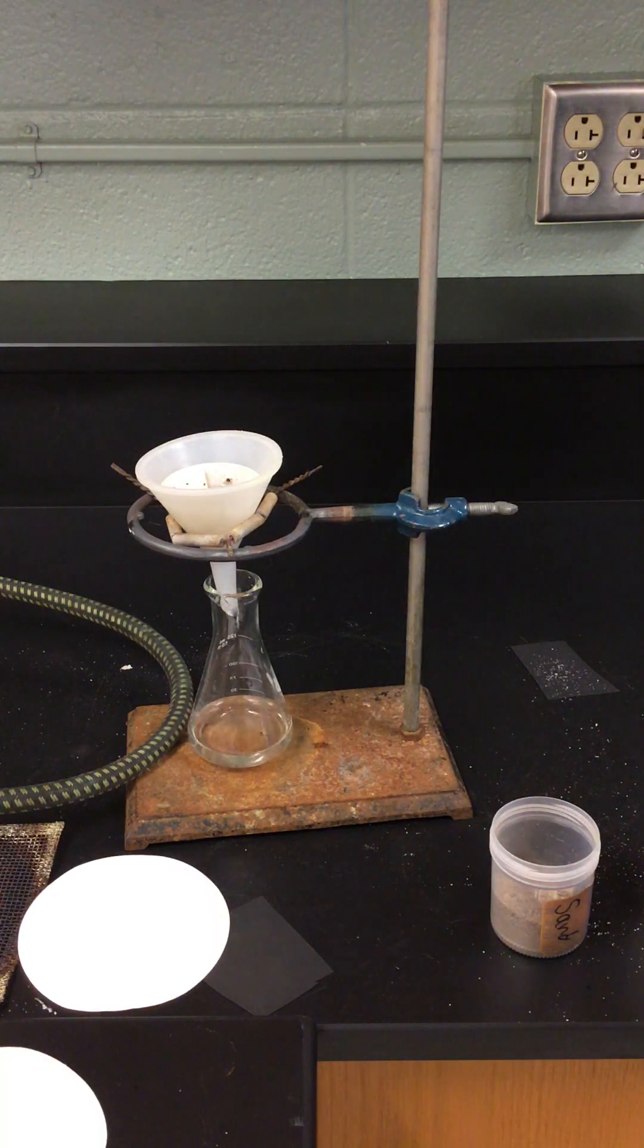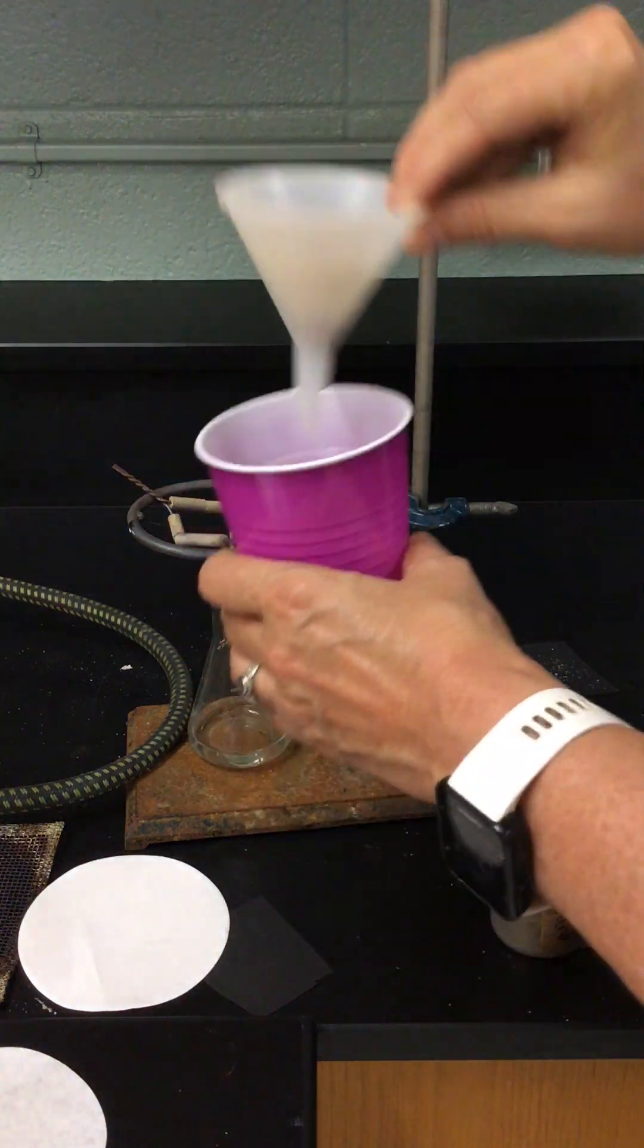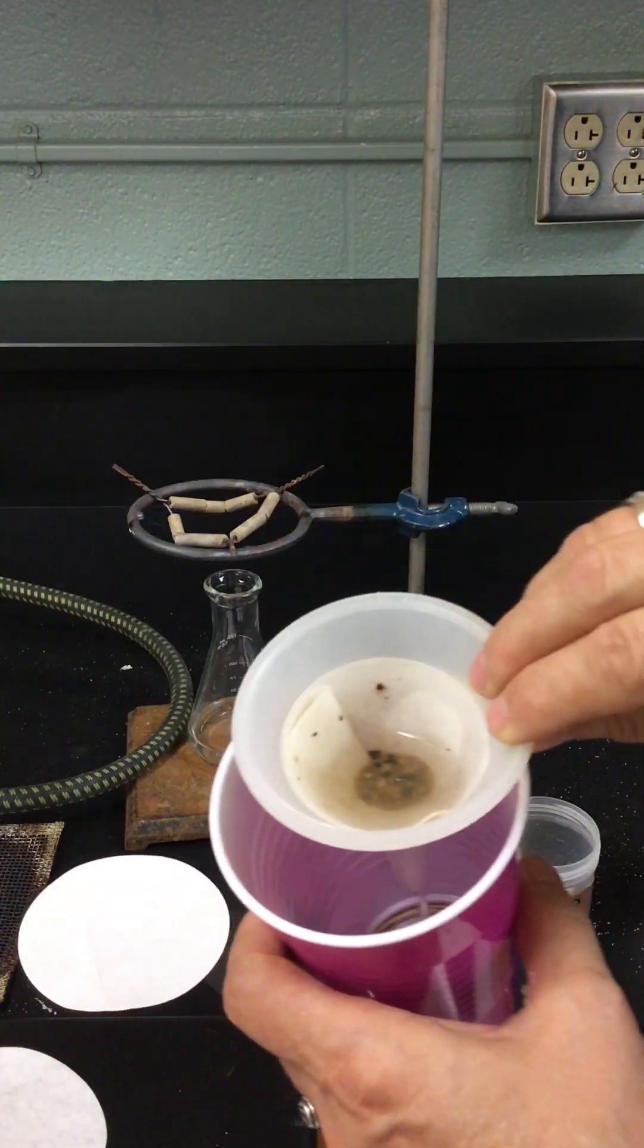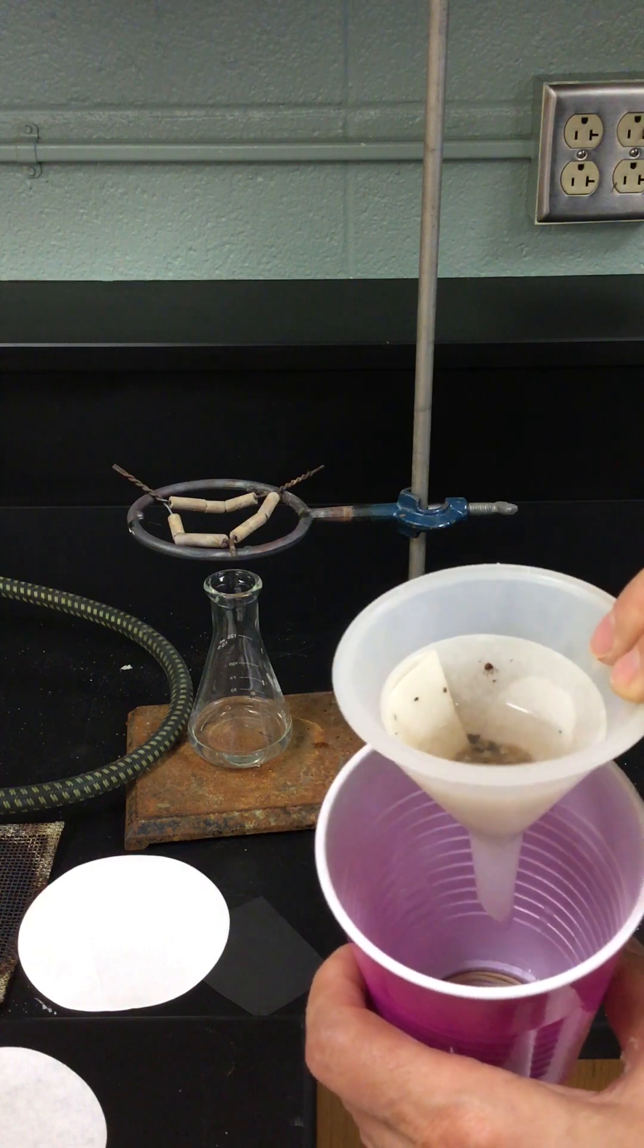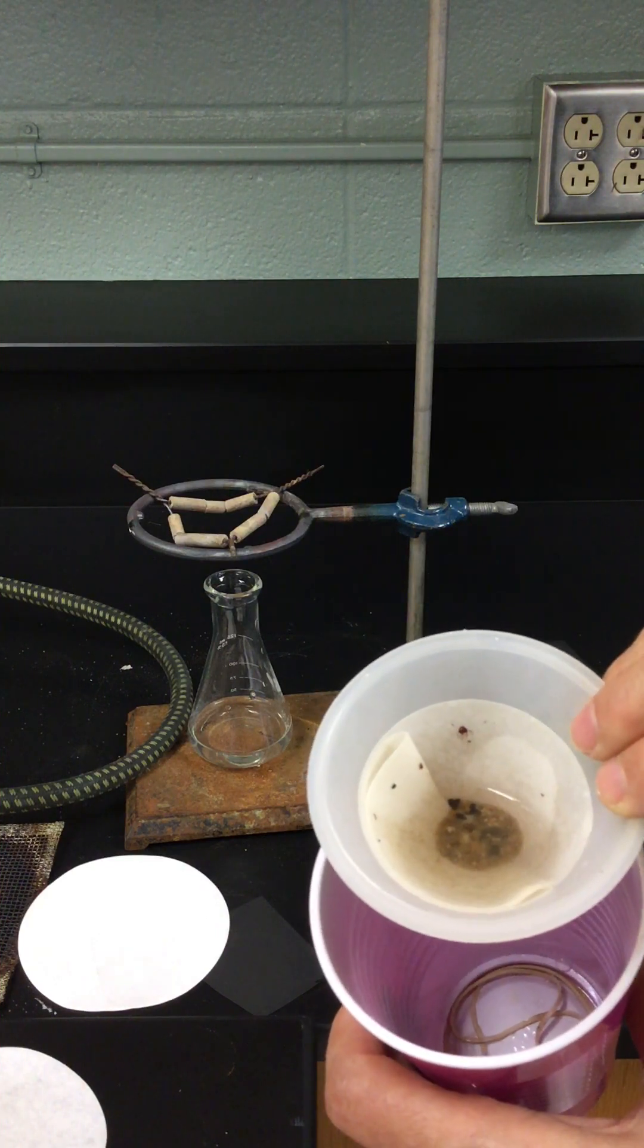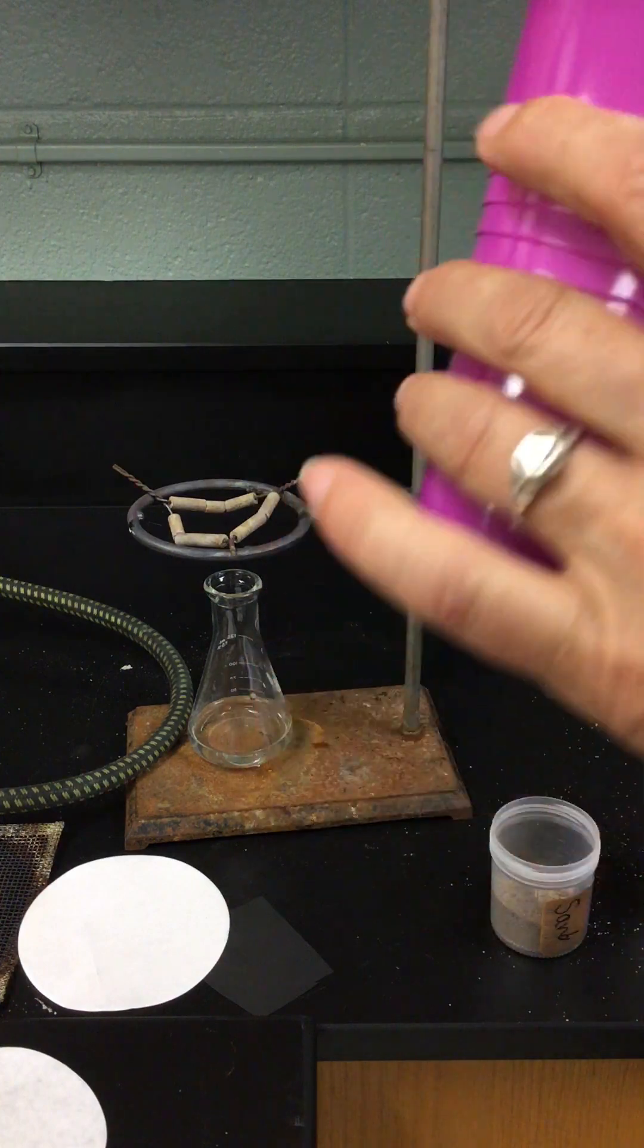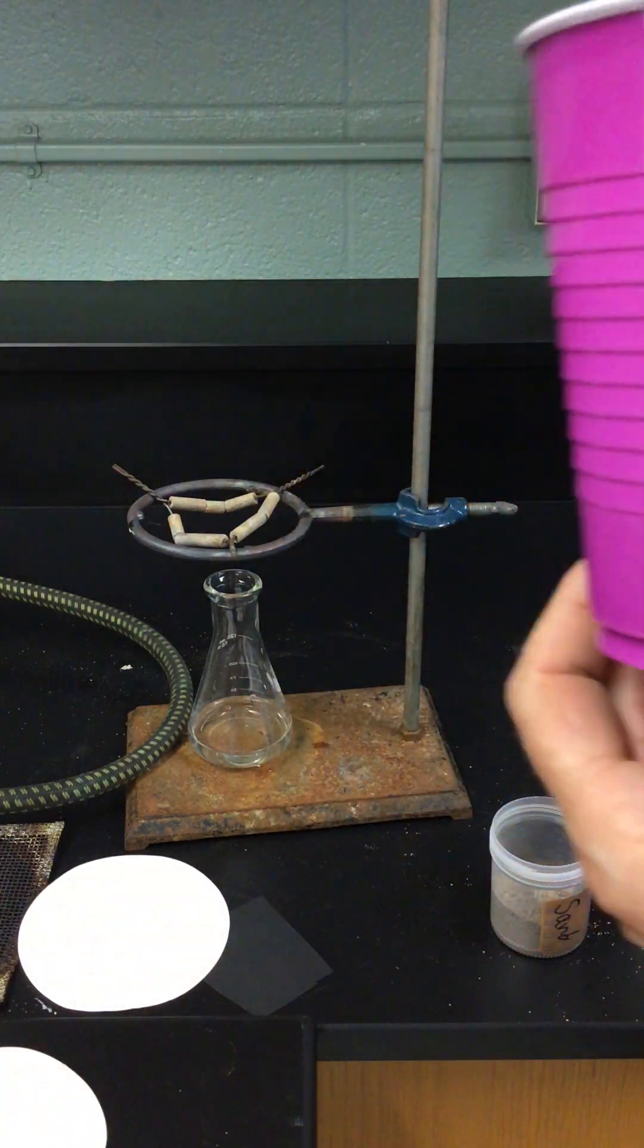We've got enough of the filtrate now. The filtrate is what goes through the filter. We've got enough. I'm going to take a look at what's in here right now. You can see what's on the filter. I'm going to let this continue to drain into this high level lab equipment, this plastic cup.